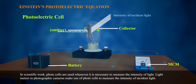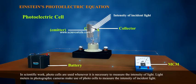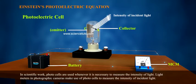In scientific work, photocells are used whenever it is necessary to measure the intensity of light. Light meters in photographic cameras make use of photocells to measure the intensity of incident light.